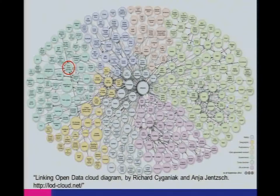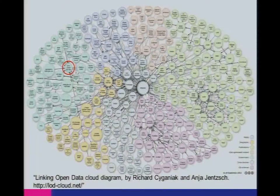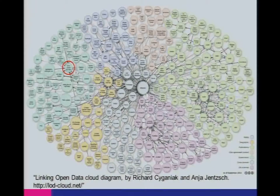For those of you who are not linked data aficionados, the big one that sits in the middle is something called DBpedia, which is a linked data version of Wikipedia. There's also something called Geonames, which is a crowd-sourced gazetteer for the whole globe. DBpedia and Geonames are a quite big hub for connecting things on the linked data web.